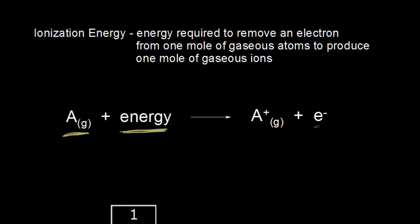If you take away an electron, you no longer have equal numbers of protons and electrons. You'd have one more proton than you do electrons, so you get a plus one charge and you form an ion. Ionization energy is always going to be positive — it always takes energy to pull an electron away. Our units are kilojoules per mole.